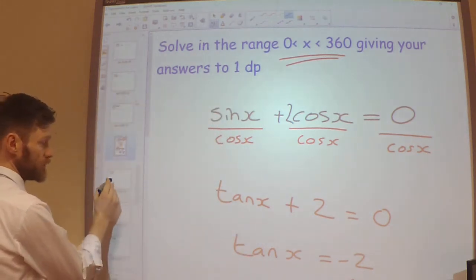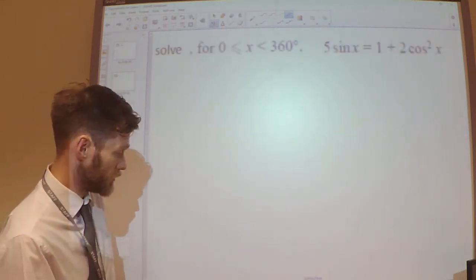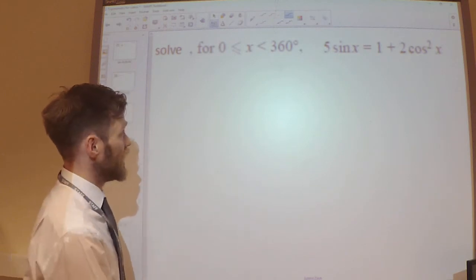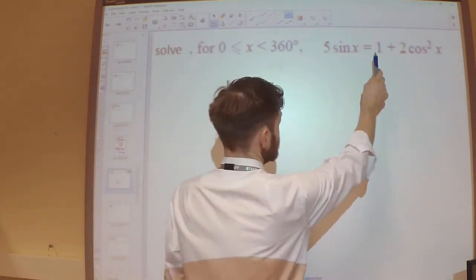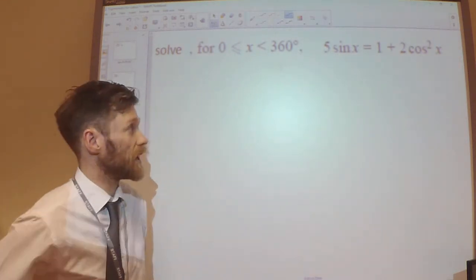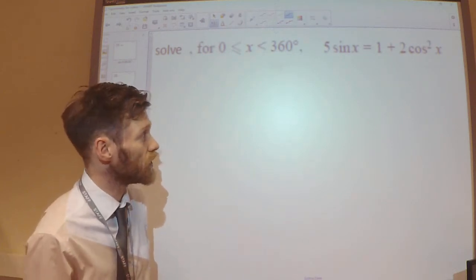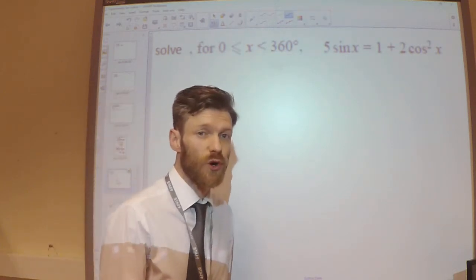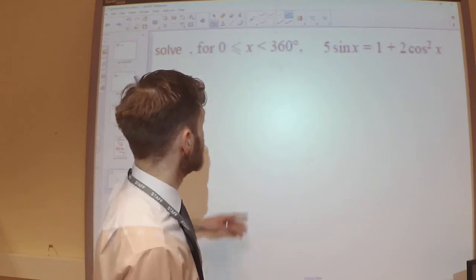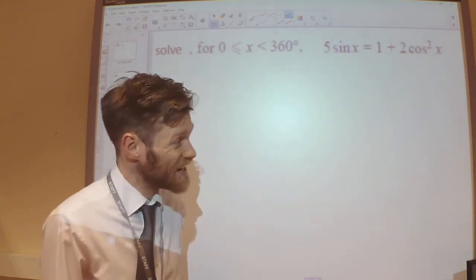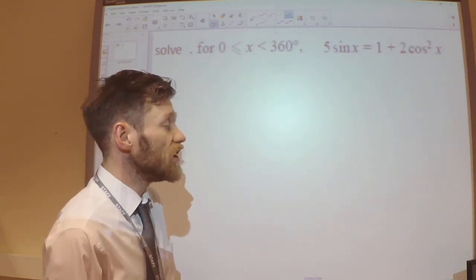Second example. So we are solving this equation: 5 sin x equals 1 plus 2 cos squared x. And that's in the range of 0 to 360 again. So looking at this equation, again, we've got a sin x and a cos x involved here.